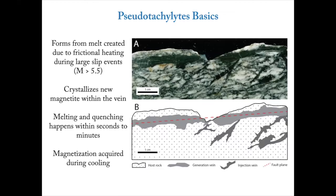Pseudotachylites form as melt created due to frictional heating during large slip events. They're typically thought to form during magnitude 5.5 and larger earthquakes. The important thing for paleomagnetism is that they're actually crystallizing new magnetite within that little glassy slip surface across the fault. They're melting and quenching all within a time span of only seconds to minutes — these are really rapid events, and any recording preserved by the pseudotachylite is locked in literally on the order of seconds to minutes.